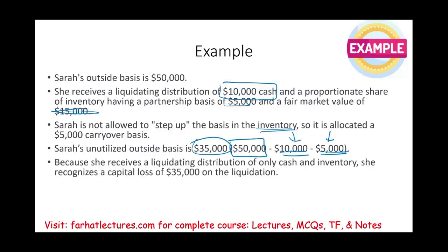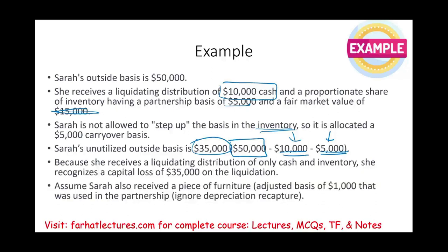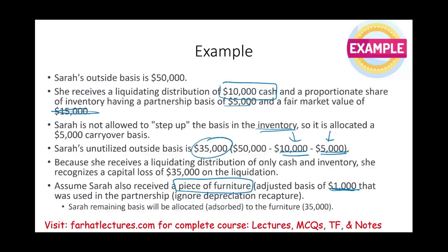Now let's change the example a little bit — assume Sarah also receives a piece of furniture from the partnership with an adjusted basis of $1,000 that was used in the partnership, ignoring any depreciation recapture. Remember that $35,000 that was a loss? The furniture will absorb the basis — the furniture will have a basis of $35,000, and the capital loss is basically evaporated, gone.